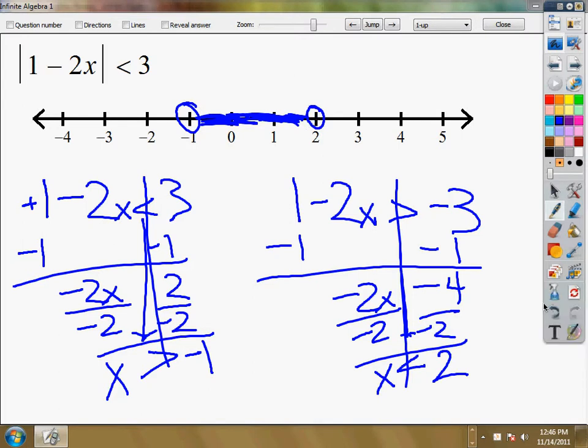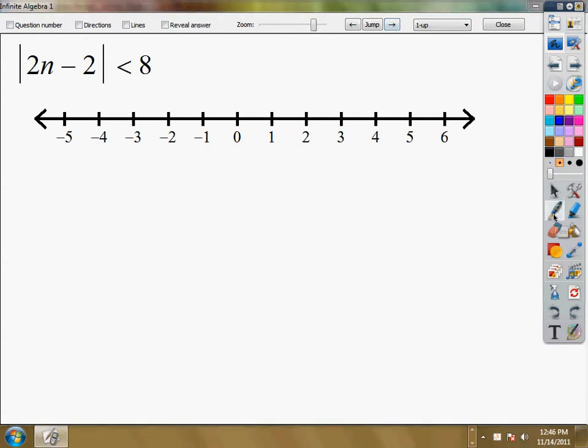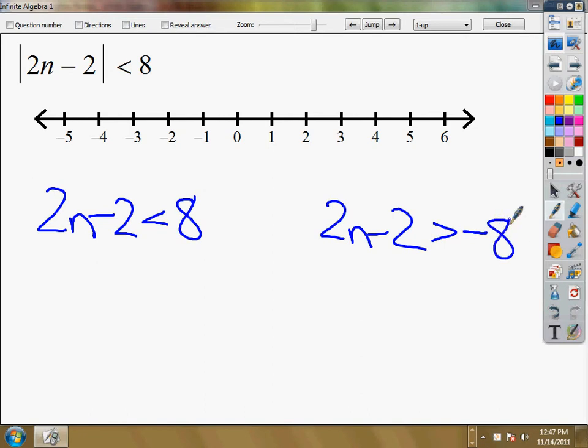Let's look at another one. So for this one, same thing. I just need to make sure when I have an absolute value that I keep the idea inside the inequality, or the absolute value signs, absolute. So it stays the same. I'll write 2n minus 2 down twice. For the first one, I treat it just like the problem shows what it is, less than 8. On the other side, I do greater than negative 8.